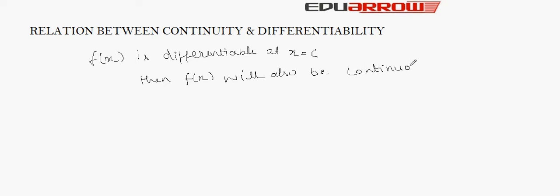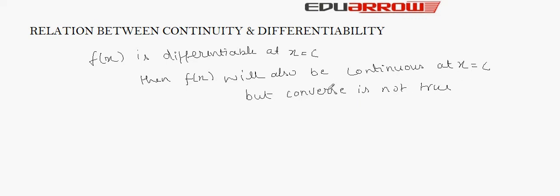First, we see the relation between continuity and differentiability. This relation says: if f(x) is a function which is differentiable at x equal to c, then this function will also be continuous at x equal to c. But the converse is not true. That is, if a function is continuous at x equal to c, that function may or may not be differentiable at x equal to c.